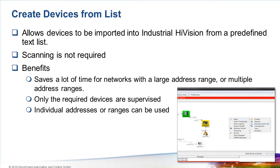In version 7, we've created a function which allows devices to be imported into Industrial HiVision from a list. The list is a text file or a CSV file which contains the IP addresses of the devices which should be supervised. This list is imported into Industrial HiVision, which then scans just the addresses in the list.